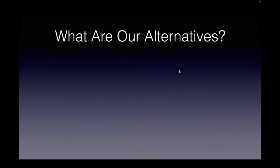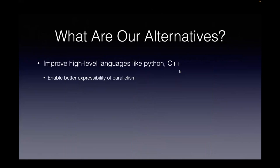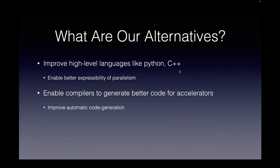What are the alternatives? Let's think about what we would do if redesigning from scratch. The first thing would be to improve higher-level languages like Python or C++ so that parallelism can be better expressed. The second step is to enable the compiler to automatically generate better code for accelerators — because remember, the birth of CUDA came precisely because compilers were not good at doing this.